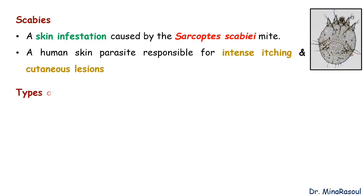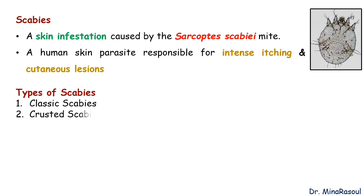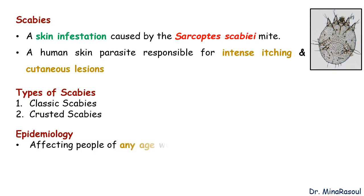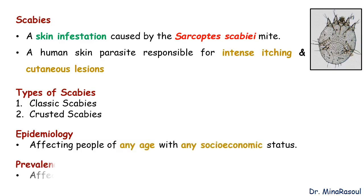There are two main types of scabies: number 1, classic scabies, and number 2, crusted scabies. Scabies affects individuals across all age groups and any socioeconomic status, with an estimated global prevalence of approximately 200 million cases worldwide.